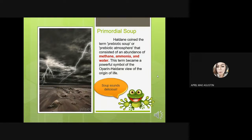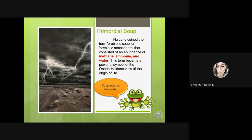This term became a powerful symbol of the Oparin-Haldane view of the origin of life. The first idea to capture scientists' attention was the primordial soup — the notion that when earth was young, the oceans were filled with simple chemicals important for life. These would eventually self-assemble into simple living cells.